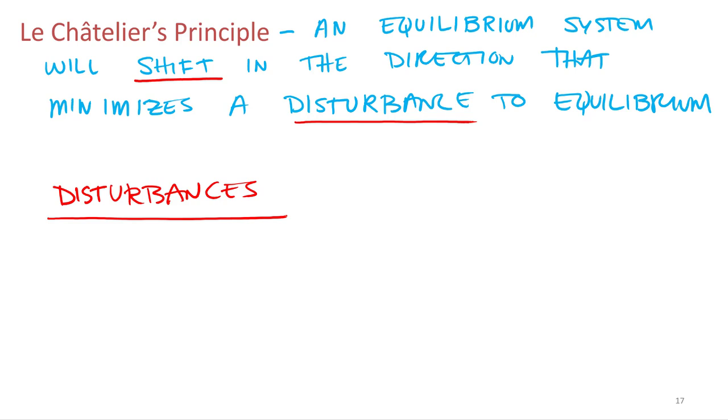So what kind of things affect rate? Temperature. Temperature. So we can mess with the temperature, and that would mess with the equilibrium.